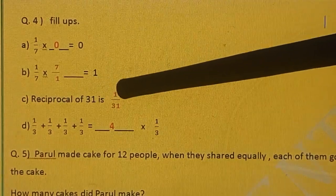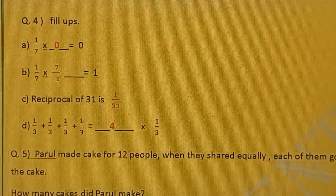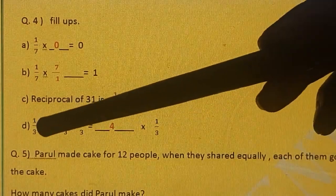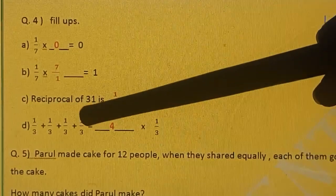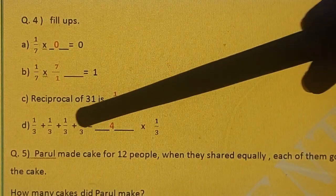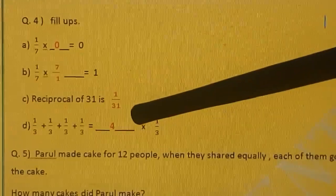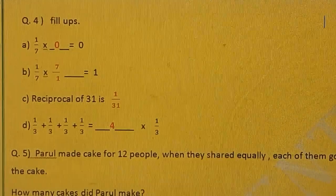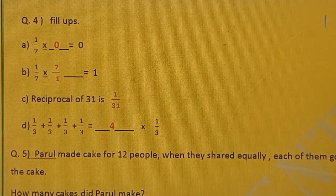Reciprocal of 31 is 1 upon 31. The part 1 upon 3 plus 1 upon 3 plus 1 upon 3 plus 1 upon 3. How many times? 1 upon 3 is there. 4 times we are adding this. So we can write down 4 multiply by 1 upon 3 by 1 upon 3. Right?